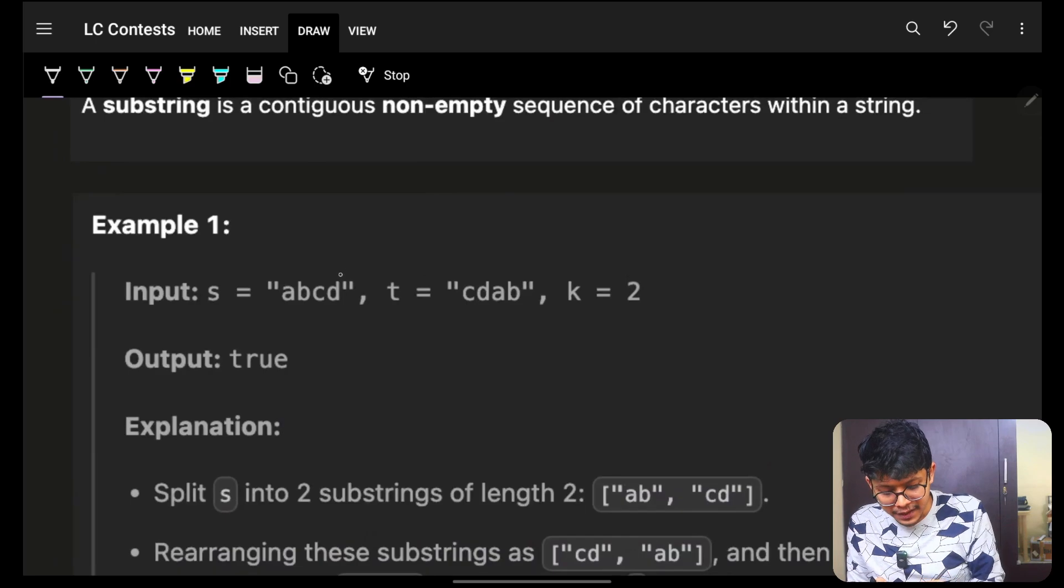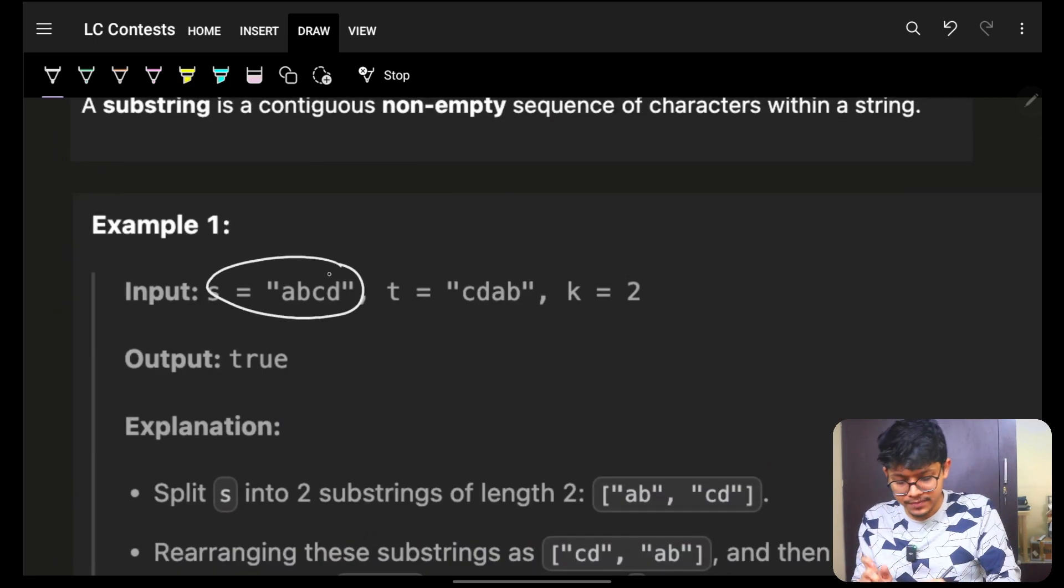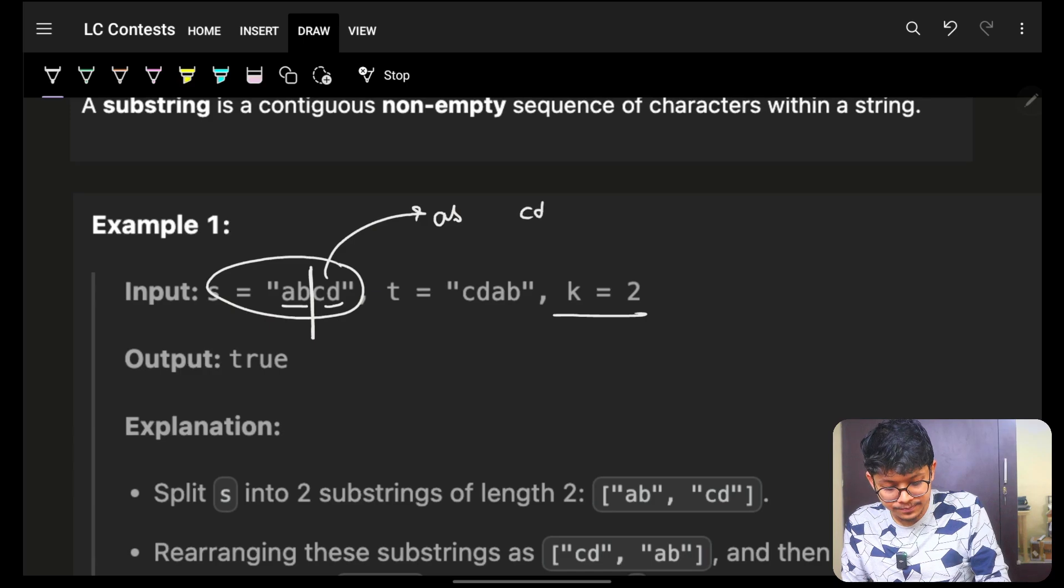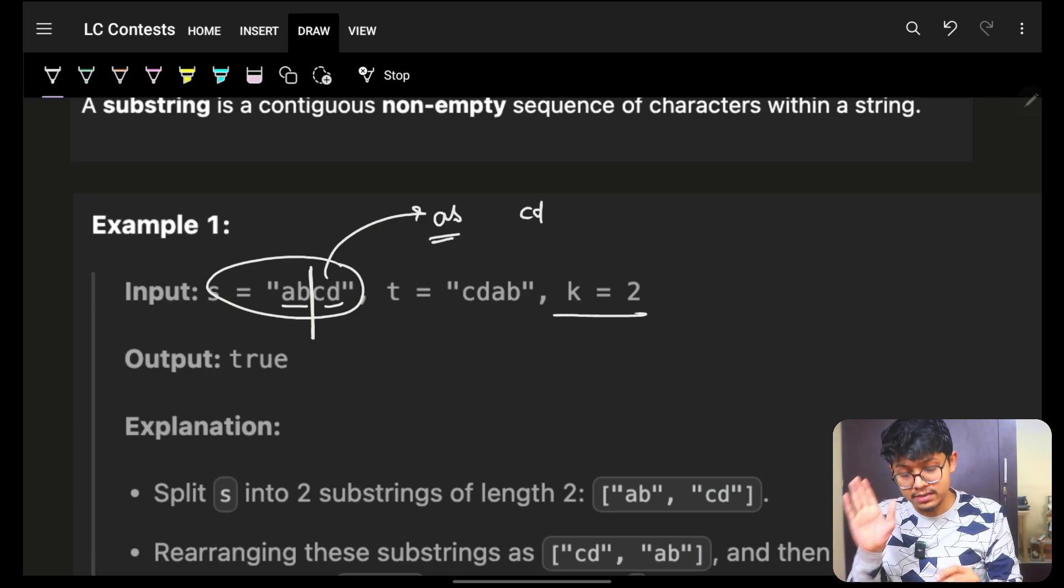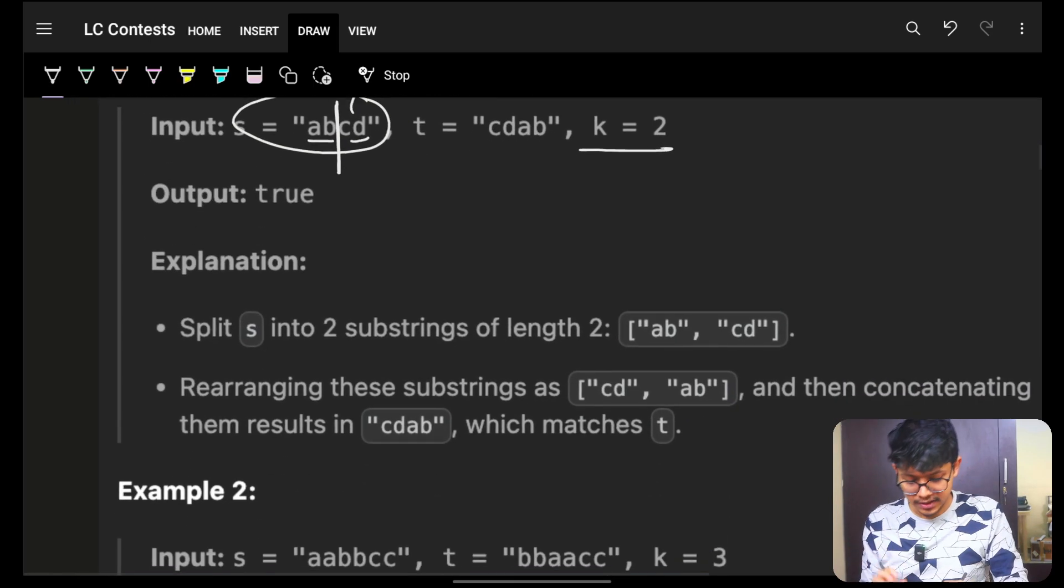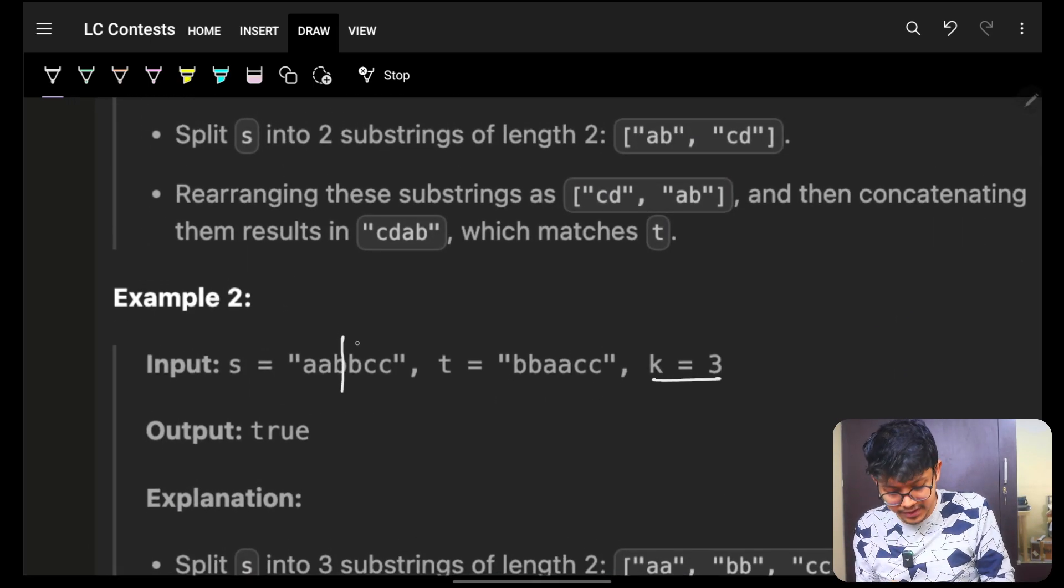But now, they have mentioned that all substrings should be of equal size, and they should be substrings. So obviously, if I have a given input string, I know I will have to divide by K only. So I will have to split here. So this will be one substring, ab. Next will be cd. And again, these will be fixed. There is no other option at all.